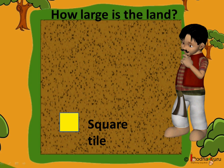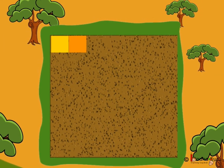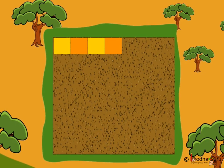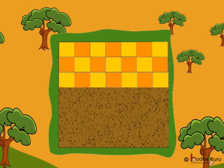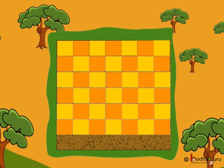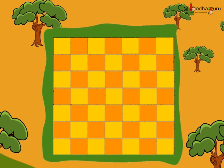Mahanath Ram started to fill the land with the square tiles. 1, 2, 3, 4, 5, 6, 7 — seven tiles were placed in the first row. And slowly, he filled the land with the square tiles until the whole land was filled, and he counted all the tiles and it came out to be 49 tiles. Let us see that.